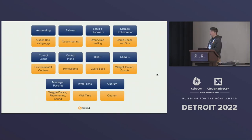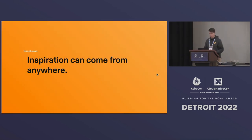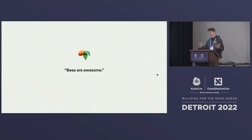In conclusion, we've seen that many concepts existing within Kubernetes also exist in the real world — specifically within bees. From auto-scaling to failover, even failover modes Kubernetes doesn't yet support, to service discovery, role-based access control, metrics, message passing, a concept of time, and quorum. Inspiration for solving our problems can come from pretty much anywhere, including things that look as tiny as bees. And ultimately — these are pretty awesome creatures. Thank you for your attention.